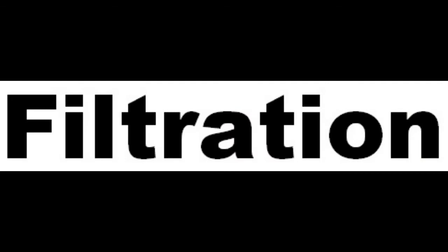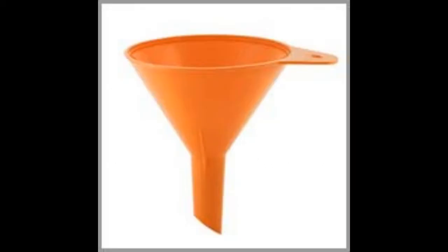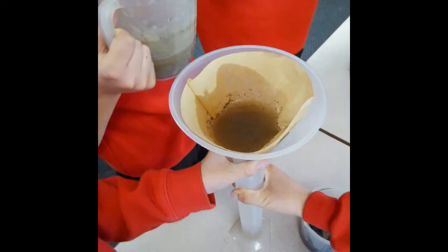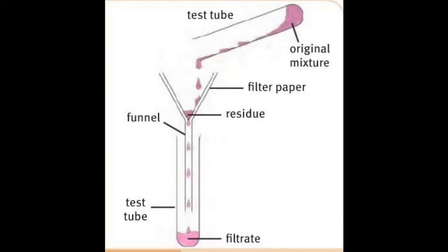The next method that we are going to look at is filtration. Filtration is a method where I have a mixture, for example, of sand and water. I've got a funnel and I put the filtration paper inside of the funnel. I pour the mixture inside of the funnel with the filter paper there, and what will happen is the water will flow through the filtration paper into the funnel and collect at the bottom inside of a test tube or a container placed at the bottom of the funnel. What will remain inside of the filtration paper is the residue, and the filtrate will fall into the test tube at the bottom.